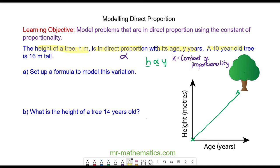A tree is 16 meters tall, so this tells you that when the height is 16, the number of years y is 10. We can substitute these values into the formula h equals k times y. H is given to us as 16, k we're trying to find, and y is given to us as 10. We can find out what k is by dividing both sides by 10.